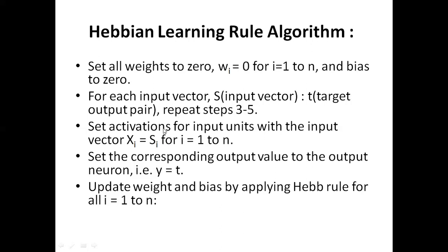For each input vector and its target output pair, you will repeat the following steps: first, set activations for input units with the input vector — x_i equals s_i. You will create an input vector and set x1 to s1, x2 to s2, and so on up to n. Second, set the corresponding output value to the output neuron: y equals t. Then update the weight and bias by applying the Hebb rule.